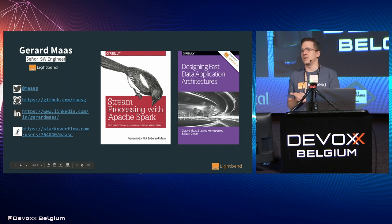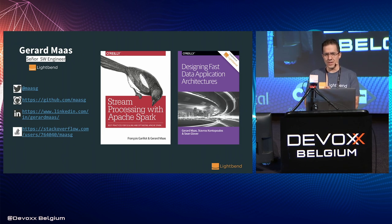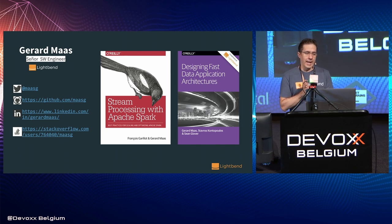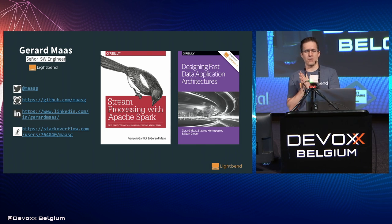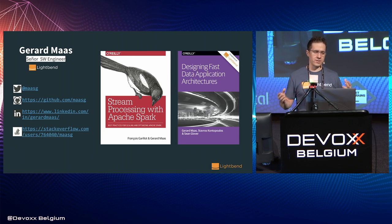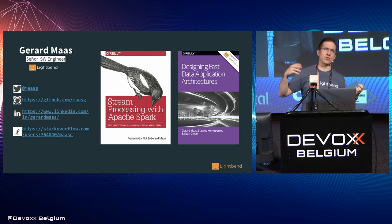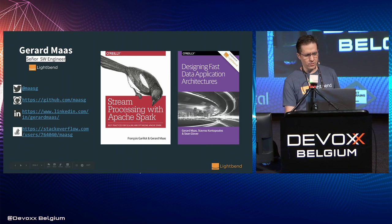I'm Gerard Maas. I've been an early adopter of the Apache Spark project, hacking on it since version 0.9, as well as Kafka and related technologies. I've been a Scala enthusiast. The last year and a half, I've been busy writing 'Stream Processing with Apache Spark' together with my colleague Francois Garillo. Today I'm going to give you the TL;DR of what we've been working on — including coverage for structured streaming and lessons on when to use each of the two APIs.